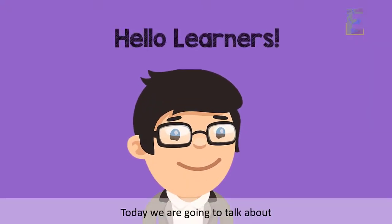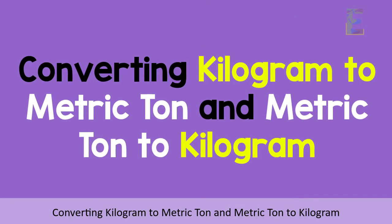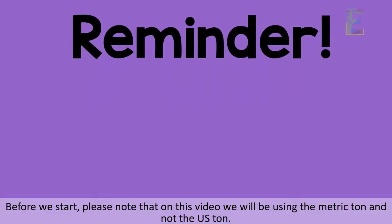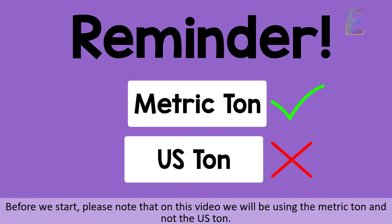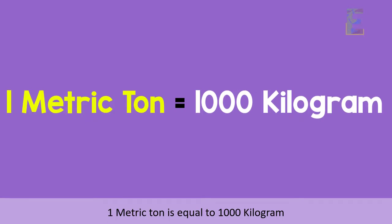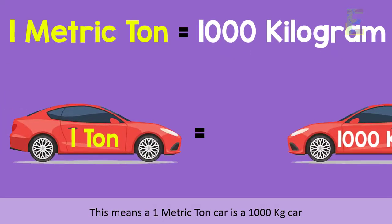Hello, Learners! Today, we are going to talk about converting kilogram to metric ton and metric ton to kilogram. Before we start, please note that on this video, we will be using the metric ton and not the US ton. 1 metric ton is equal to 1,000 kilograms. This means a 1 metric ton car is a 1,000 kilograms car.